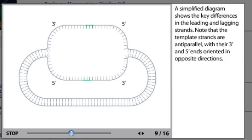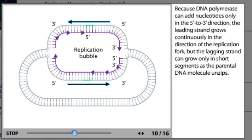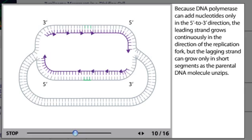A simplified diagram shows the key differences in the leading and lagging strands. Note that the template strands are anti-parallel, with their 3 prime and 5 prime ends oriented in opposite directions. Because DNA polymerase can add nucleotides only in the 5 prime to 3 prime direction, the leading strand grows continuously in the direction of the replication fork, but the lagging strand can grow only in short segments as the parental DNA molecule unzips.